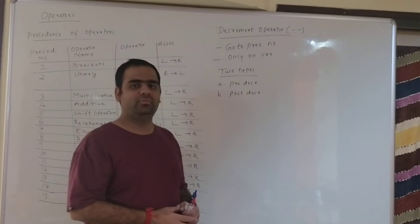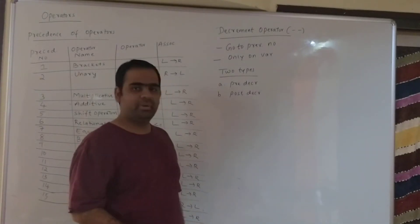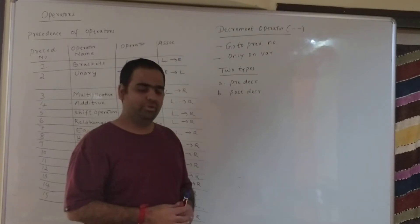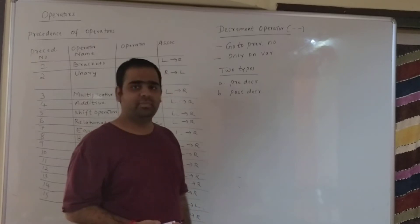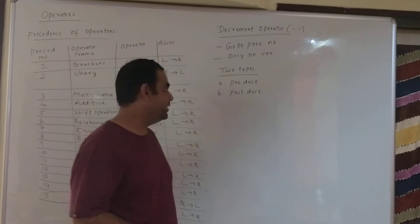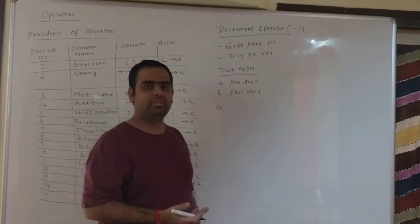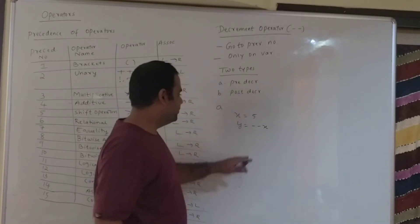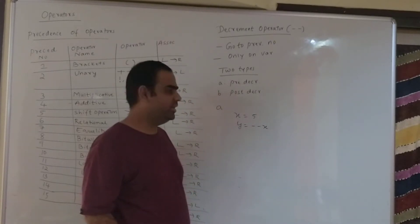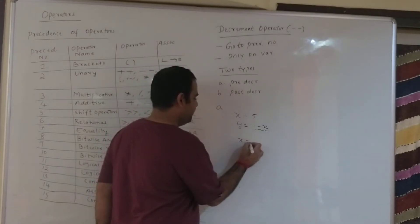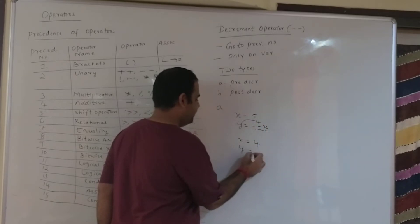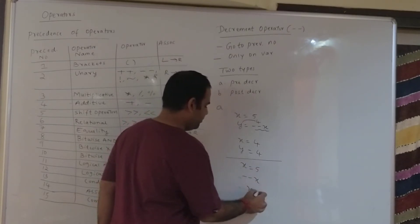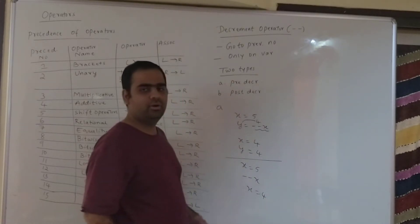The next type of operator is the decrement operator. The symbol is minus minus, which means go to the previous number. It is also a unary operator, meaning it acts on only one operand, and it can only be applied on variables, not on constants. There are two types: pre-decrement and post-decrement. In pre-decrement, the operator appears before the operand. For example, x is equal to 5 and y is equal to minus minus x. First, the decrementation takes place — x becomes 4, and 4 is copied to y, so y also becomes 4. It is not mandatory to assign to some variable.